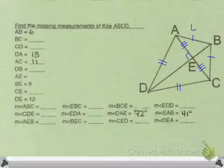If we know that AB is 6, we also know that BC is 6, so we can fill that in. If we know DA is 13, which is over here, then CD must also be 13.